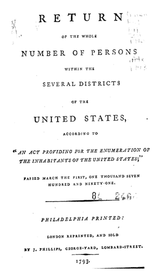Data on ethnic groups are important for putting into effect a number of federal statutes — enforcing bilingual election rules under the Voting Rights Act, monitoring and enforcing equal employment opportunities under the Civil Rights Act. Data on ethnic groups are also needed by local governments to run programs and meet legislative requirements, such as identifying segments of the population who may not be receiving medical services under the Public Health Act, and evaluating whether financial institutions are meeting the credit needs of minority populations under the Community Reinvestment Act.